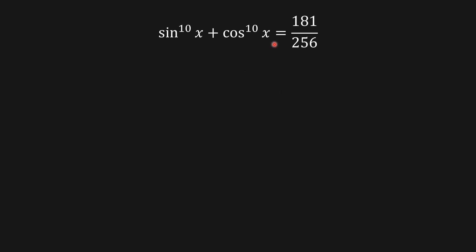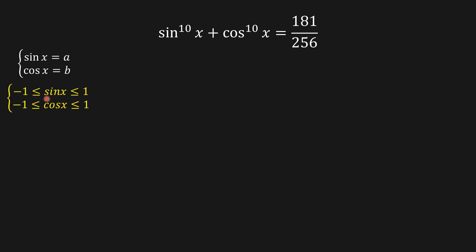Hello guys, welcome to the channel. Today we're going to be solving this trigonometric equation — a very beautiful equation. I'm going to make a substitution: I'll say sine x equals a and cosine x equals b. To solve this kind of trigonometric equation we have to consider the condition that minus one is less than or equal to a, less than or equal to one, and the same for b, which is cosine x.